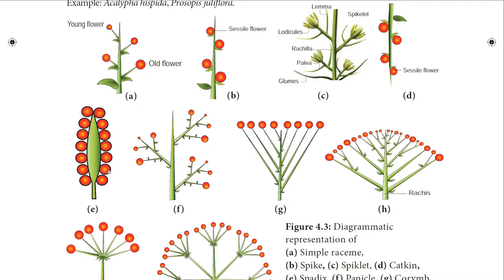The next type is spadix. The inflorescence axis becomes thick and fleshy and bears many unisexual flowers in acropetal succession. Female flowers are found towards the base and male flowers are at the top. Each inflorescence is covered by a brightly coloured, hard bract called the spathe. This is seen in Amorphophallus and Colocasia.